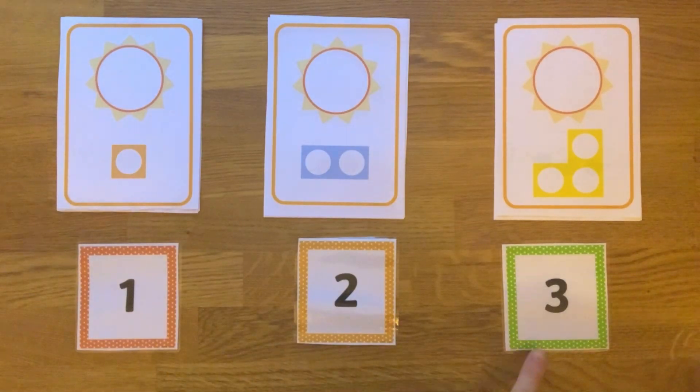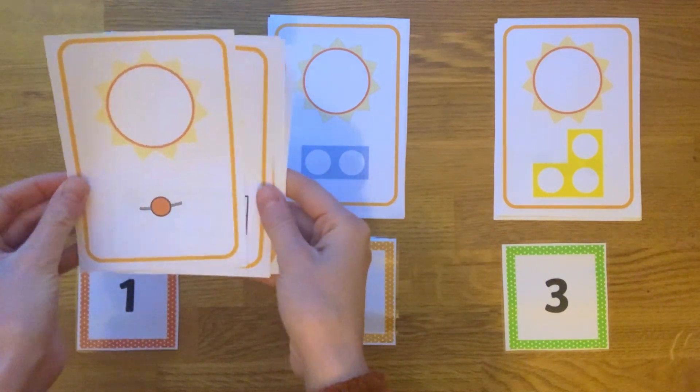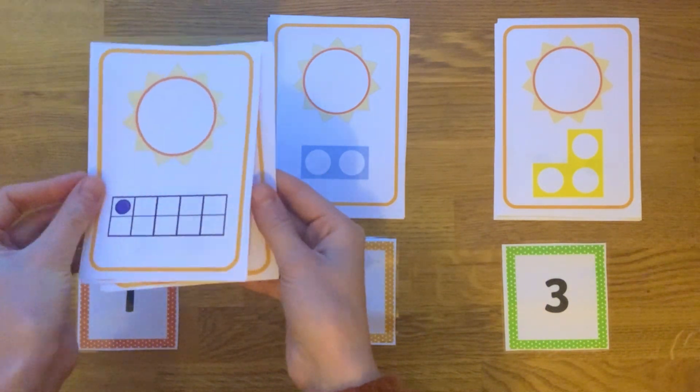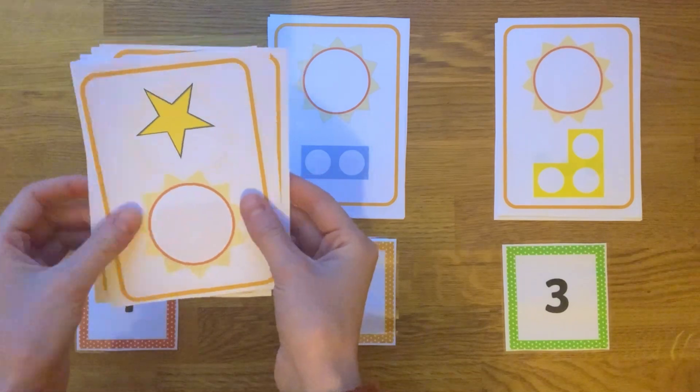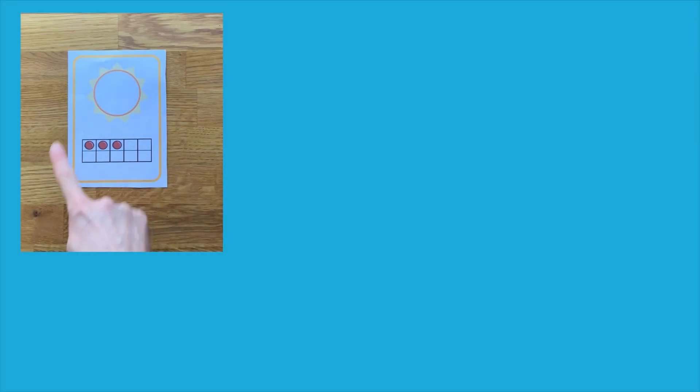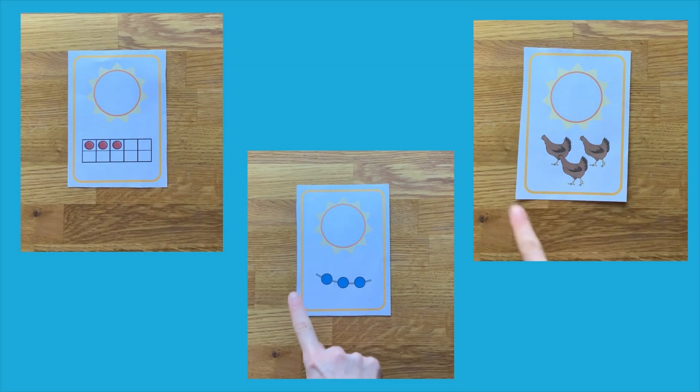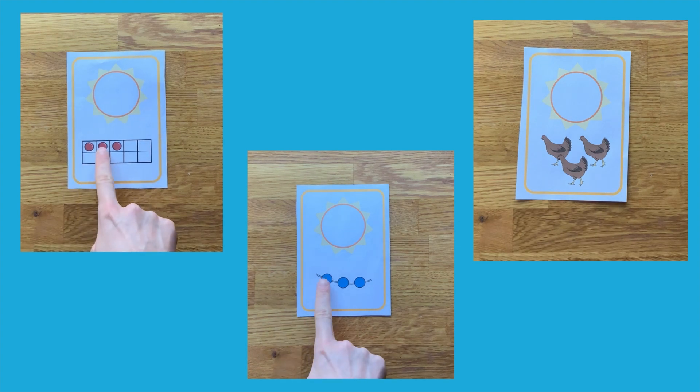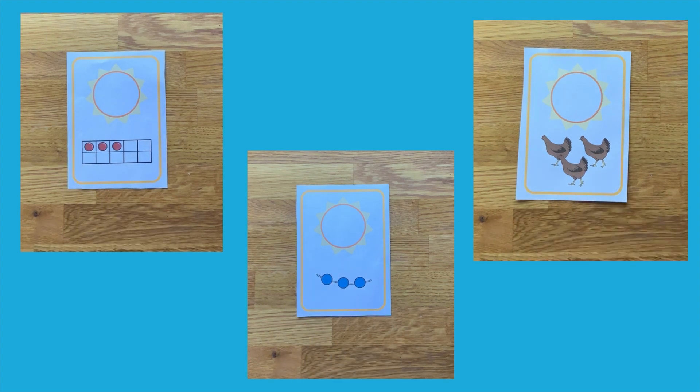The resource includes various visual representations of numbers 1 to 3. Children may be able to instantly recognise the number shown in the representation or they could count out how many they see in each picture.